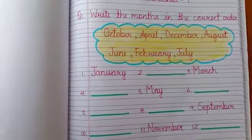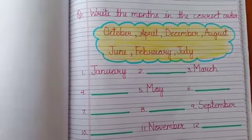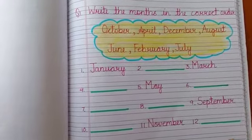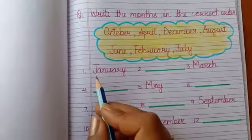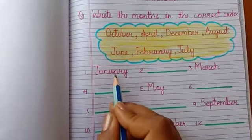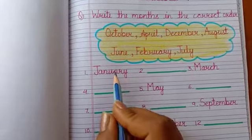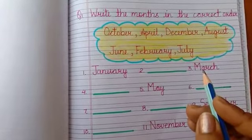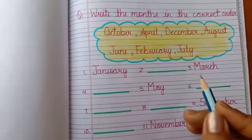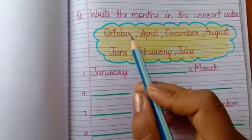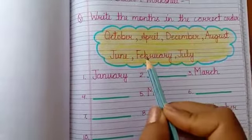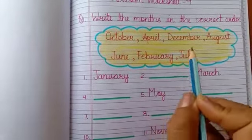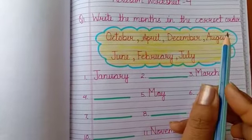So those were the months in a year. Now you have to write them in the correct order. The first month is January. What comes after January? February! Yes, so you have to search for February from the options here.